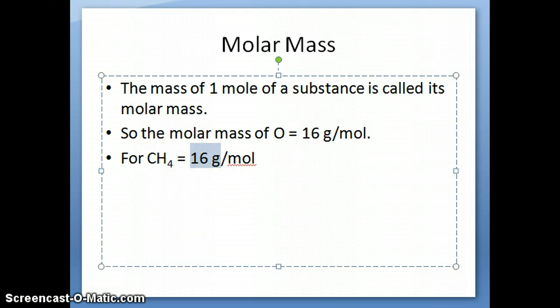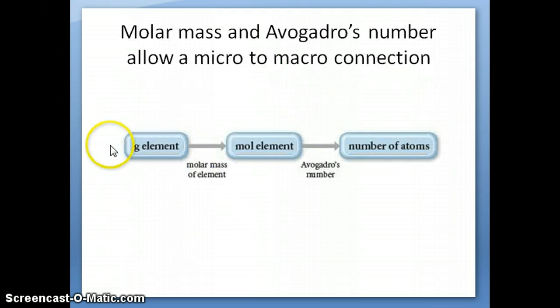We have basically two different numbers that we can use to convert substances in the macroscopic scale, in grams, things that we can actually look and see and measure, to things that are small in the microscopic range, in the scale of atoms, things that we can't see.